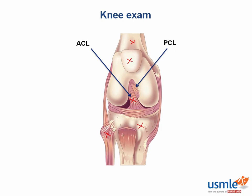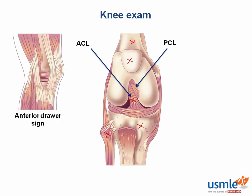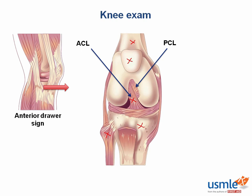How would you test these ligaments? Using the anterior and posterior drawer signs. In the anterior drawer sign, if the ACL is out, the tibia moves freely anteriorly. A second and actually more specific test for the ACL is called the Lachman test. This test is performed by pulling the tibia anteriorly while the knee is flexed at 30 degrees. This tests for any significant laxity of the ACL. Conversely, in the posterior drawer sign, you're testing the PCL — the tibia slides posteriorly.